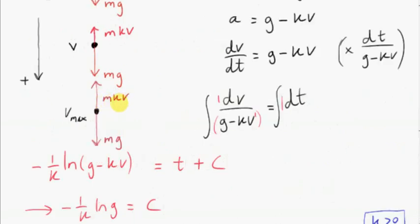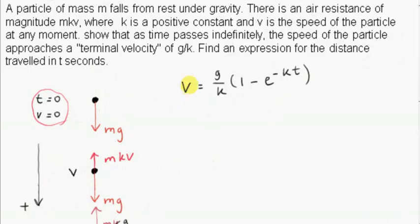Going back to the picture, the maximum speed is g over k. The resistance force is m times k times v, where v at terminal velocity is g over k, so the maximum resistance force equals mg — the weight of the particle. In the next part, we find an expression for the distance traveled in t seconds. The speed v equals ds/dt, so we solve this separable differential equation by multiplying both sides by dt.